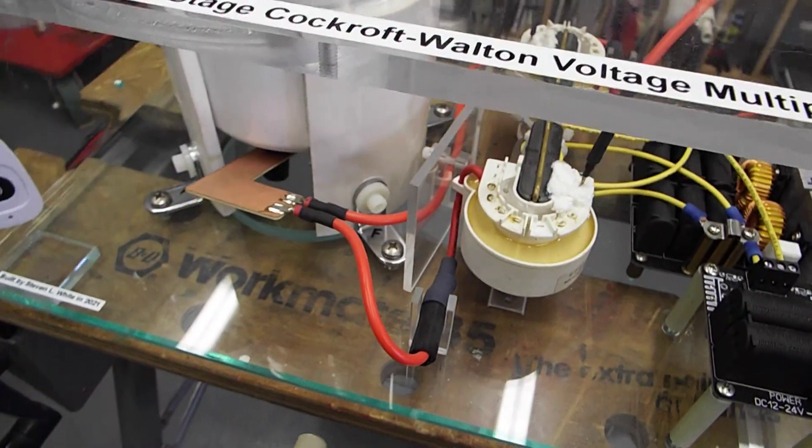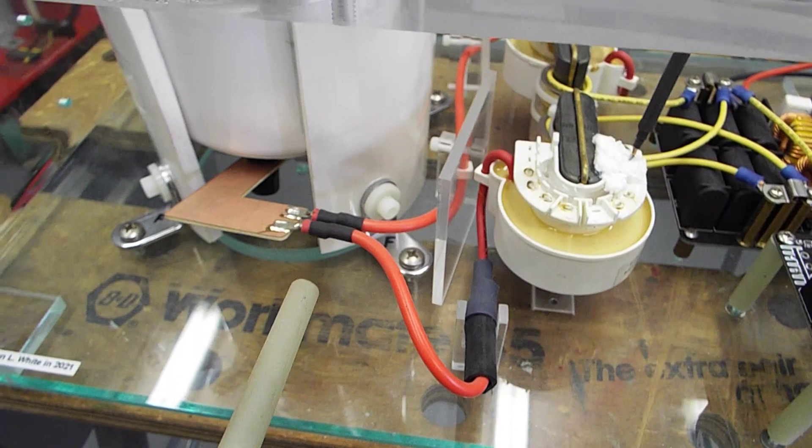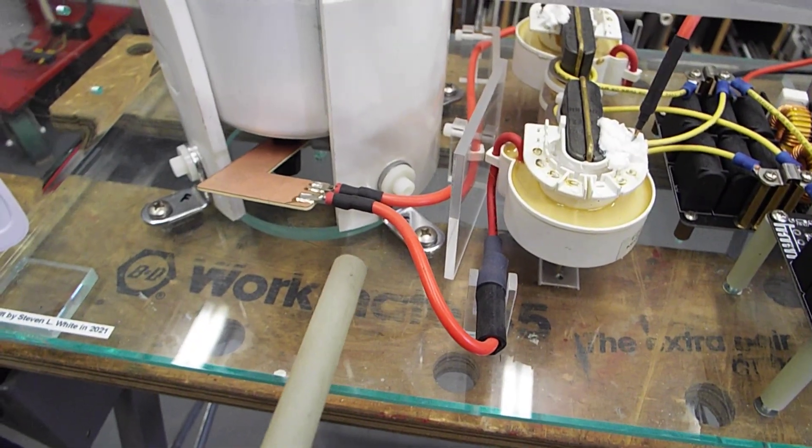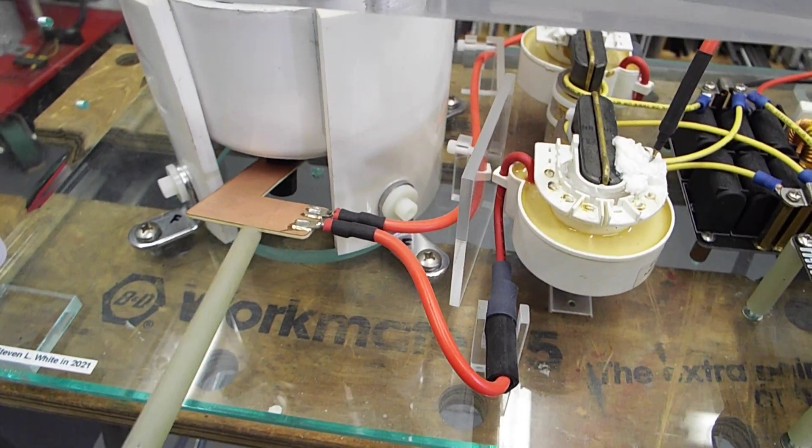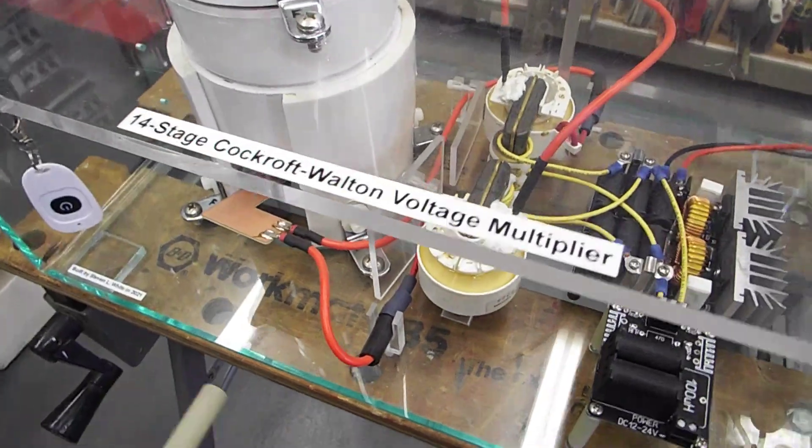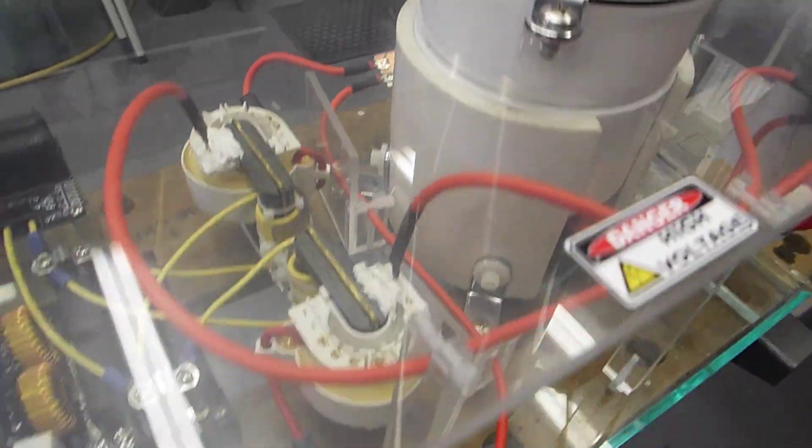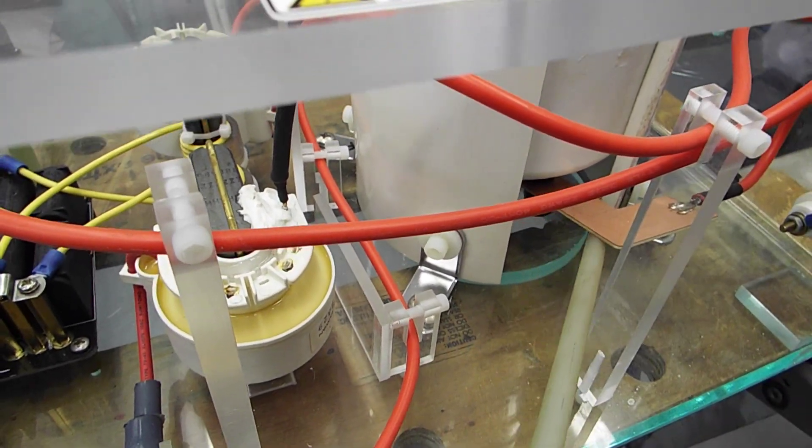So then the output of those flyback transformers goes into the base, which is 28 kilohertz AC, goes into the base of the multiplier stack. Here's one electrode. And the other electrode is over here on the other side, right here.